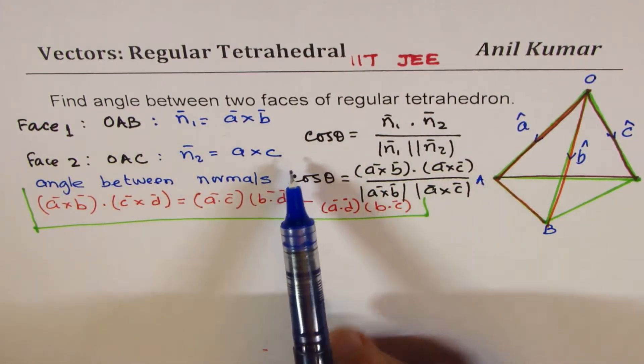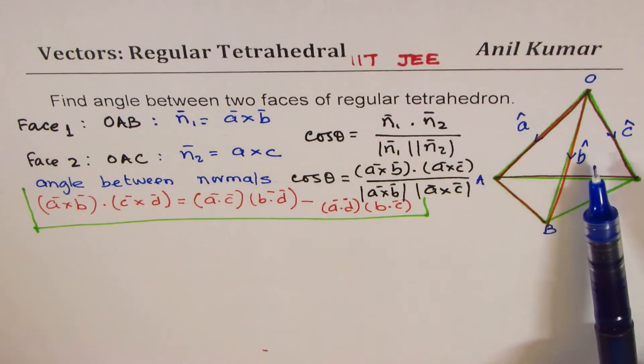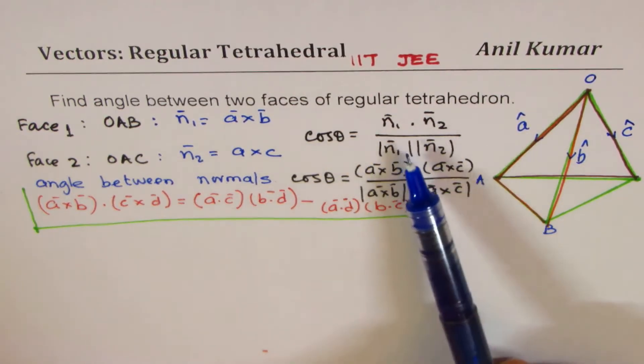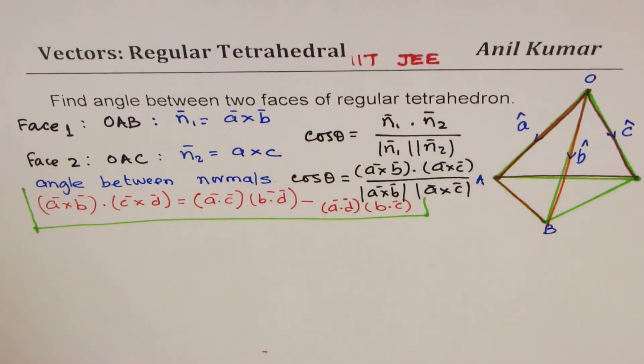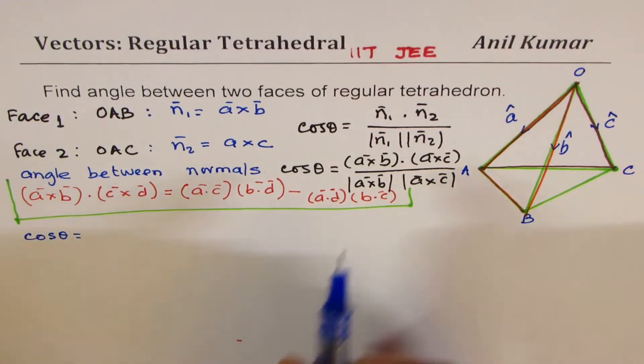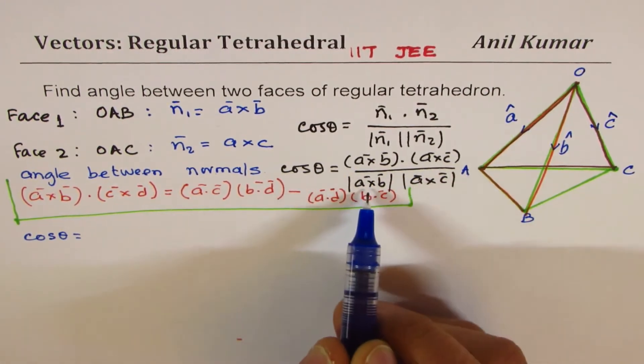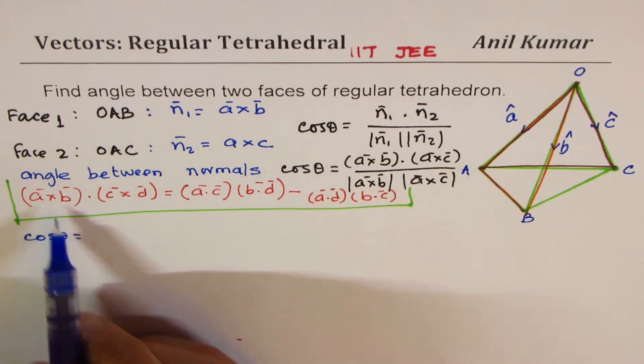I hope the concept is clear. We are finding angle between two faces, which is same as angle between their normals. Cos θ equals their dot product divided by the magnitude of their normals. We'll apply the formula here.